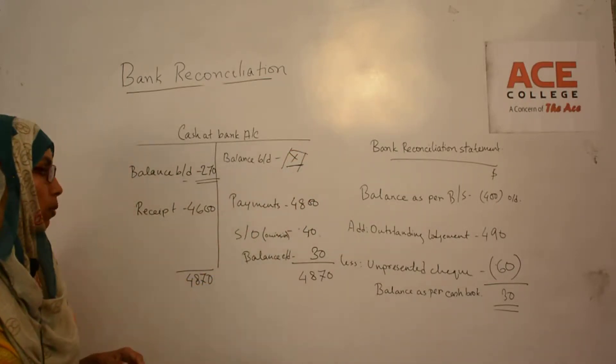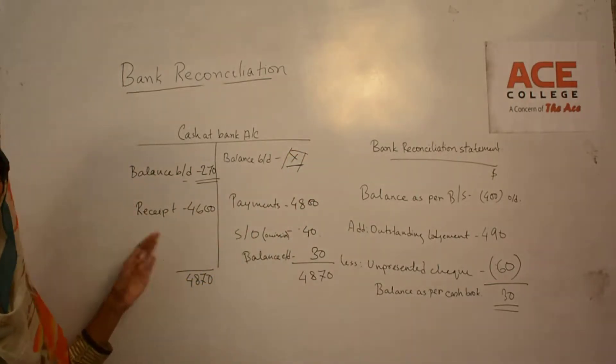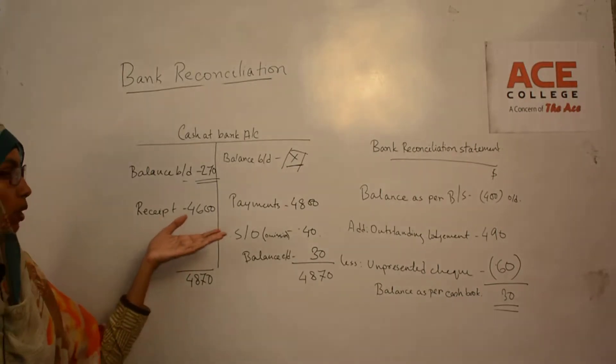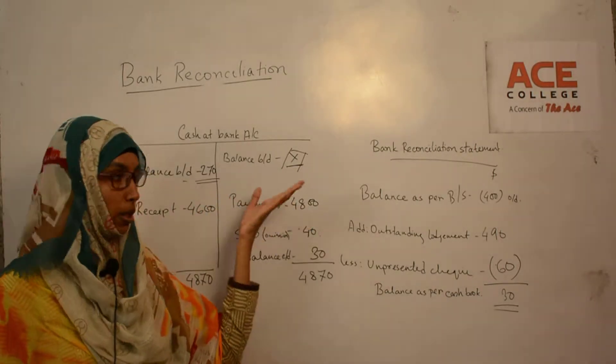Once again, the receipt is $4,000 or the payment is $4,800.